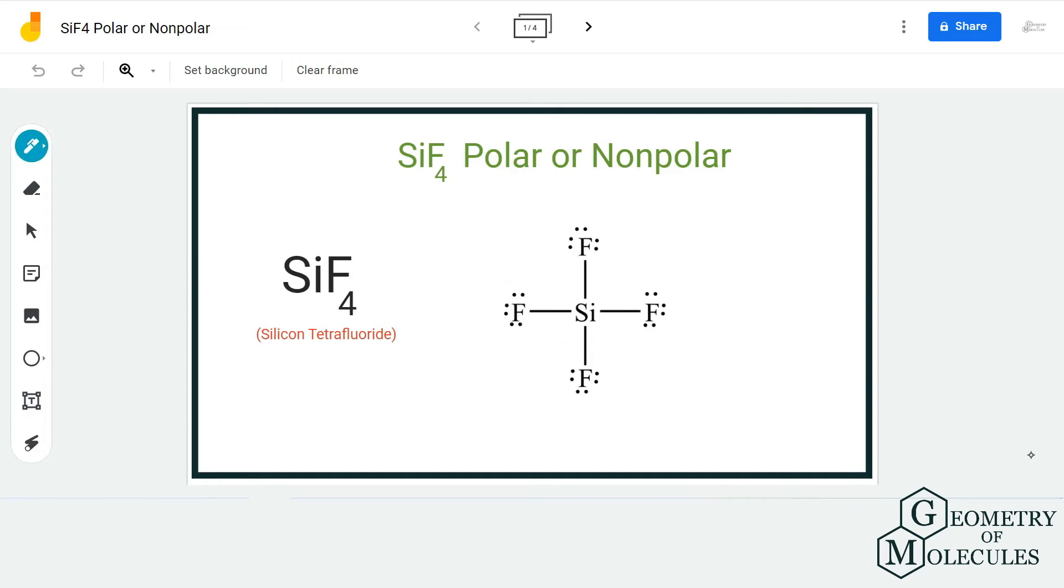So there are no lone pairs on this central atom and this molecule seems to be symmetrical, which is why I assume that it could be a non-polar molecule. Generally, molecules in which there are no lone pairs on the central atom and have symmetry are non-polar molecules.